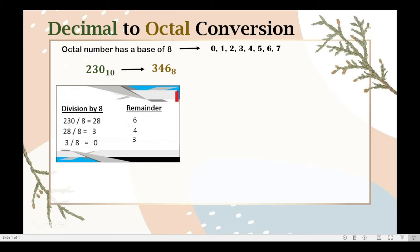Let us use the same given decimal number which is 230 to the base of 10. So we convert first 230 to the base of 10 into binary. In my previous video, I already discussed how to convert decimal number into binary, and I already converted 230 to the base of 10 into binary. And 230 to the base of 10 when converted into binary is 11100110. So this is the binary form of this decimal number.